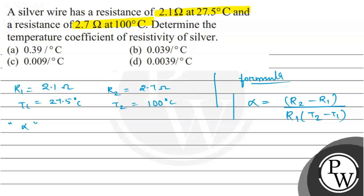So we will just use this here and simply put values in it because we know the values of R2, R1, T2, T1. So to find alpha, we simply calculate R2 which is 2.7 minus R1 which is 2.1, upon R1 which is 2.1, temperature is 100 minus 27.5.